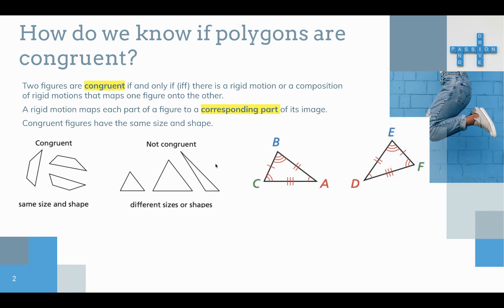So these two triangles are congruent: triangle ABC and triangle DEF. But be very careful — when you're making a congruence statement, the order matters. Notice the congruence marks: I go from one congruence mark to three congruence marks to two congruence marks. So when I make the statement that this triangle is congruent to this triangle, I have to match up the vertices accordingly. Triangle ABC does in fact match up with triangle DEF.